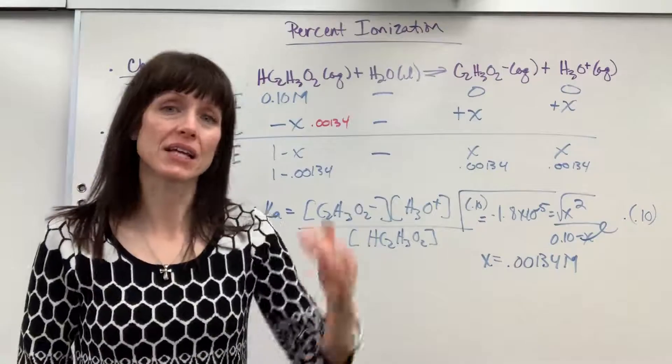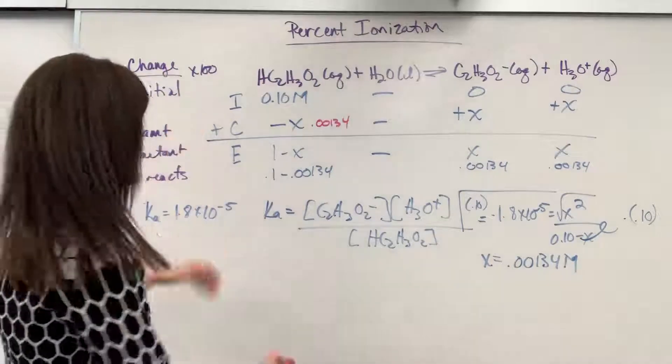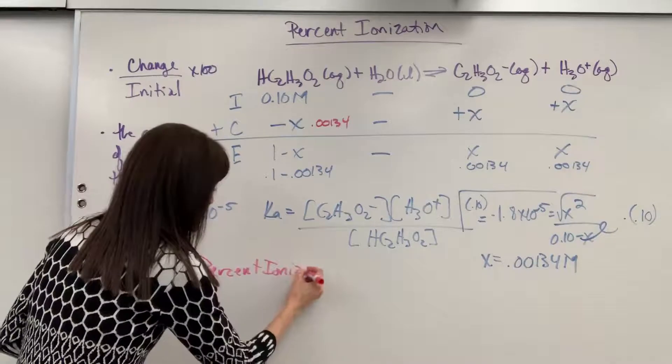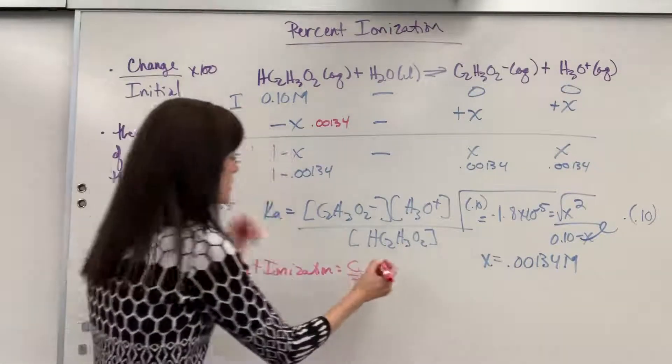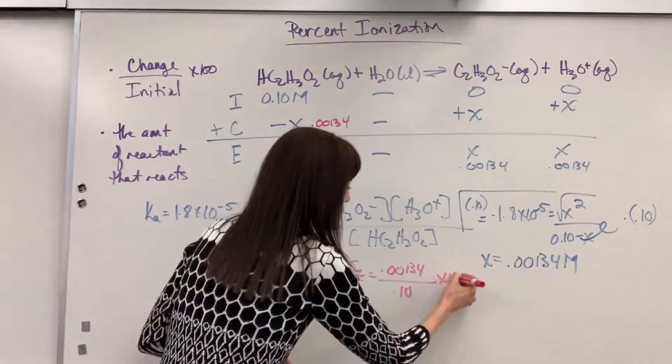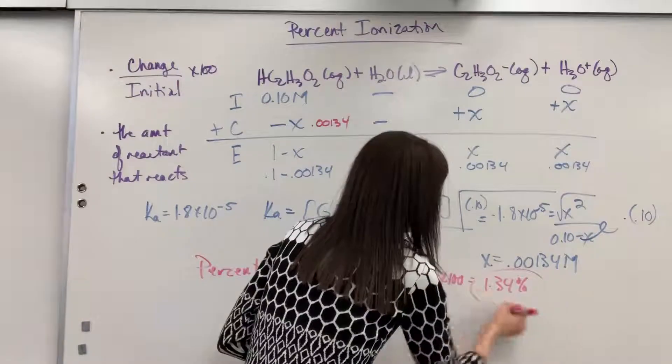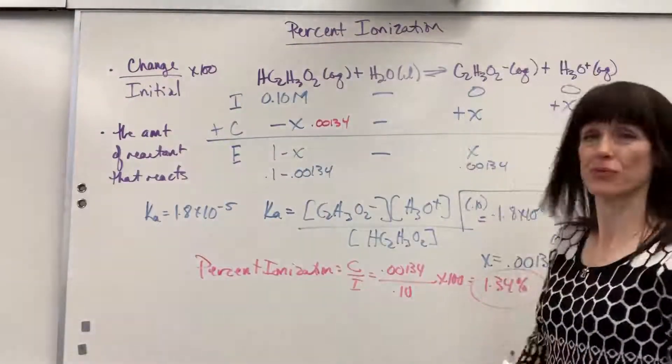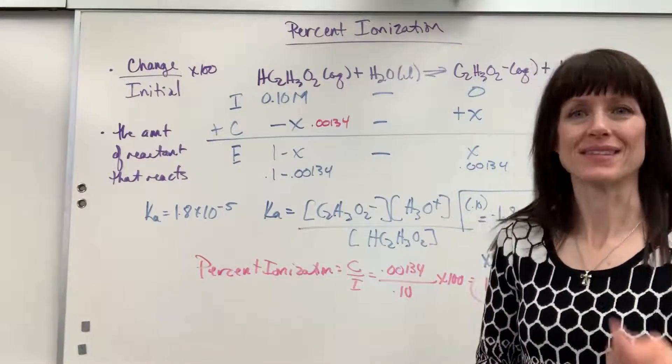So to find the percent, I just take the amount that reacted divided by the amount we began with. Change divided by initial. So percent ionization is going to equal the change divided by initial, which is going to be 0.00134 divided by my initial 0.10 times 100, and we are going to get 1.34 percent. Wow! When I put that acetic acid in the water, only 1.34 percent of that is going to react, is going to ionize.